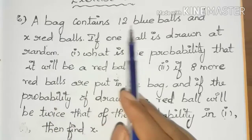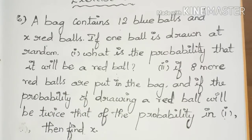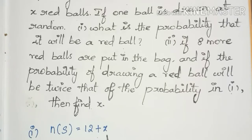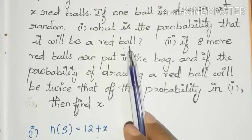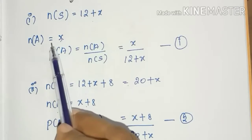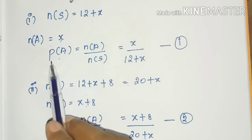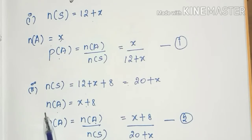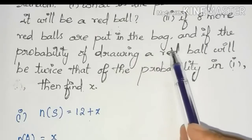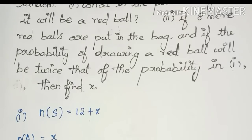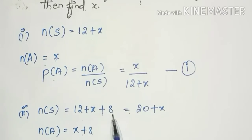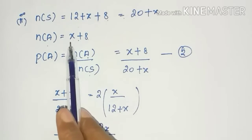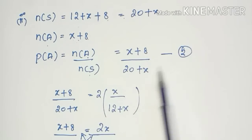Let me summarize. We have 12 blue balls and x red balls, so n(S) = 12 + x. The red ball count is x, so P(A) = x divided by (12 + x) — this is equation 1. For part two, 8 more red balls are added: n(S) becomes 20 + x, and the red ball count becomes x + 8, giving P(A) = (x + 8) divided by (20 + x) — equation 2.